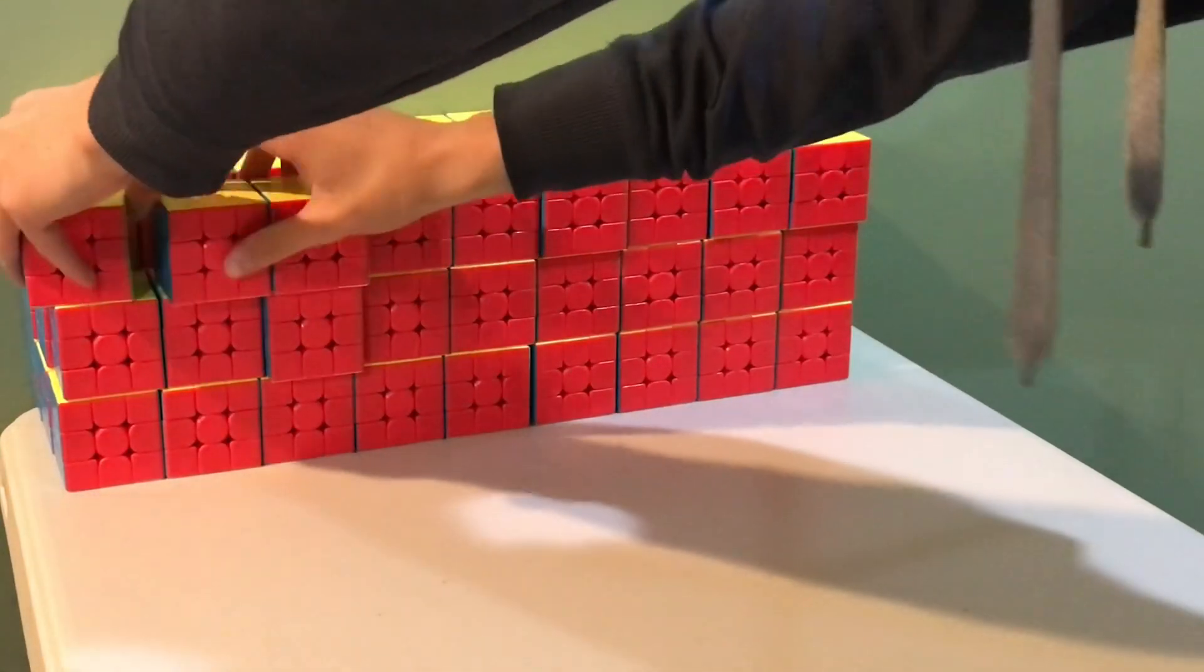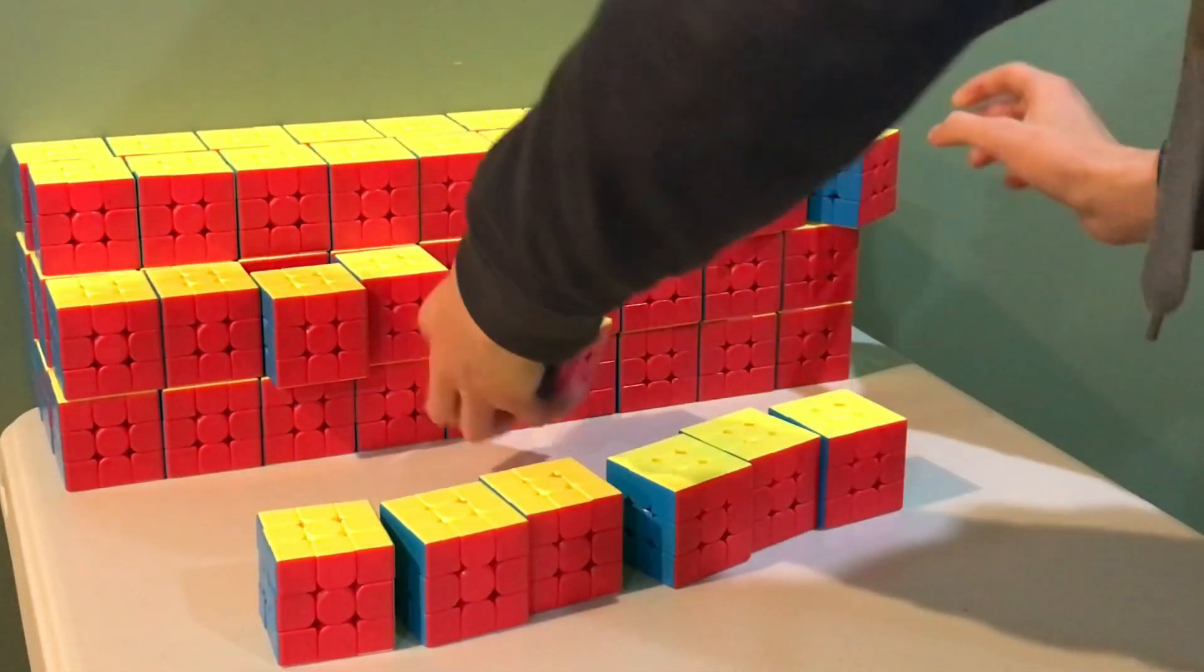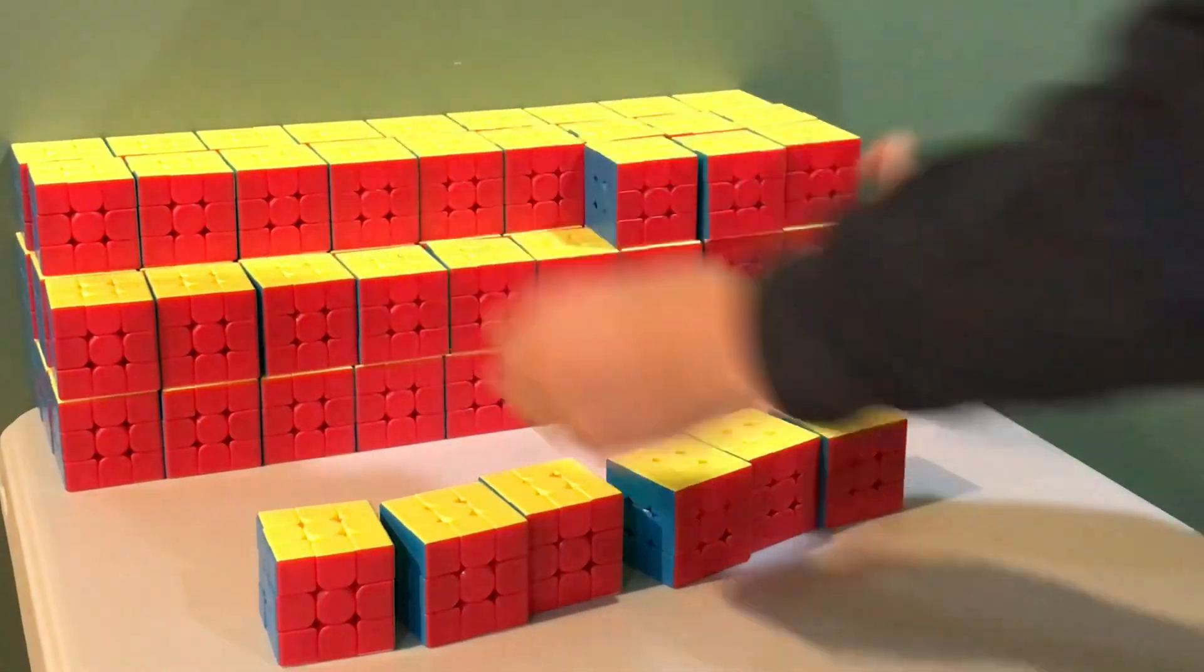In case you don't know what a force cube is, you take six stickerless 3x3s and take all the tiles off to make all of the cubes one color each.